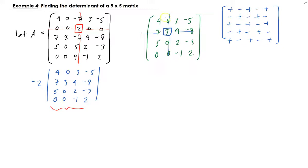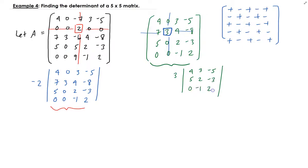Using the sign convention for the four by four matrix — plus, minus, plus — this entry is going to be plus three. So it's three times the determinant of the three by three sub-matrix: [4, 3, -5 / 5, 2, -3 / 0, -1, 2]. Once we get that, we multiply by three, then plug back in and multiply by minus two to get the final determinant.